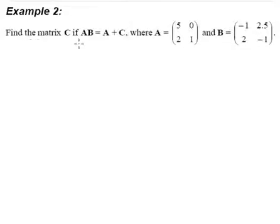Example 2: Find the matrix C if AB equals A plus C. Matrix A is a 2 by 2 matrix: 5, 0, 2, 1. Matrix B is another 2 by 2 matrix: negative 1, 2.5, 2, and negative 1.